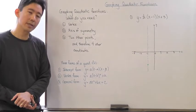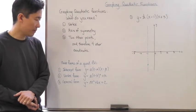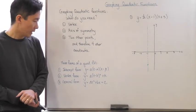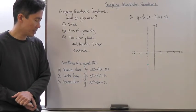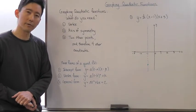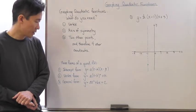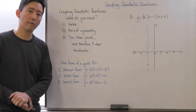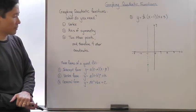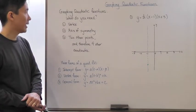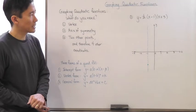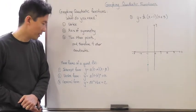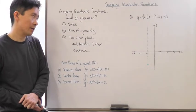We also have the vertex form, which is really just the form of the quadratic after you complete the square. The nice thing about vertex form is it gives you the coordinates of the vertex very quickly. And then we have the general form, y equals ax squared plus bx plus c, which is probably the least helpful and will require a little more work to graph.